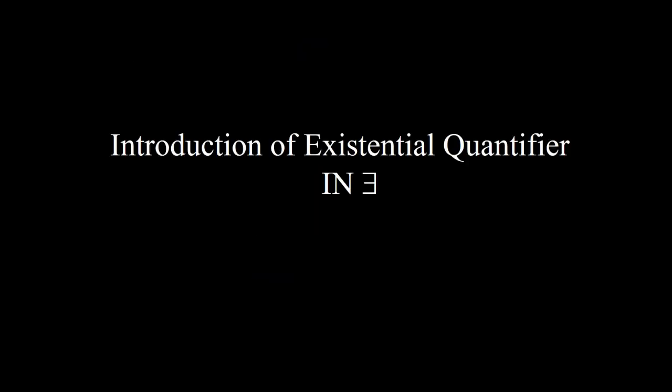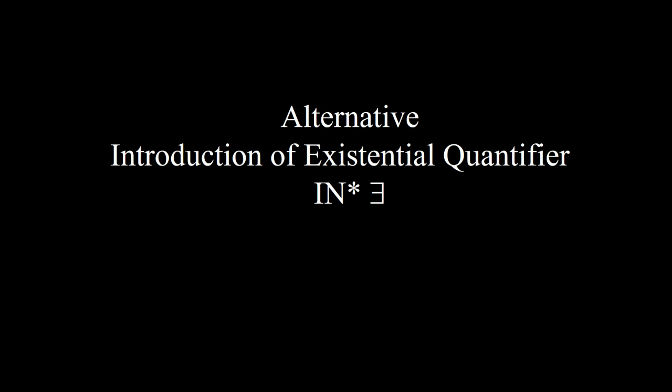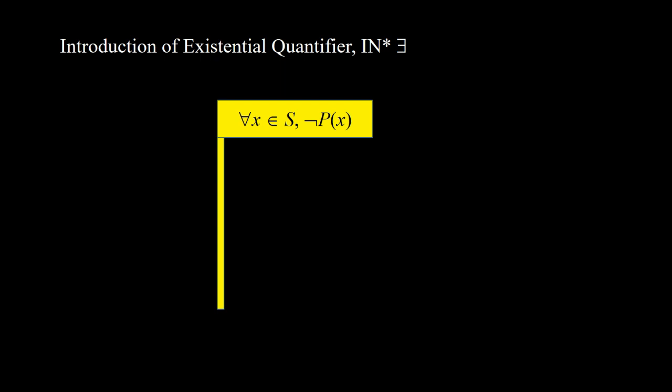Introduction of existential quantifier — we use this notation for reasoning. If we have under a rectangular or pointed flag x ∈ S and p(x), then we have ∃x ∈ S p(x). Alternative introduction of existential quantifier: if we have ∀x ∈ S ¬p(x) in the flag and we have false under the flag, then we conclude ∃x ∈ S p(x) under the pole.